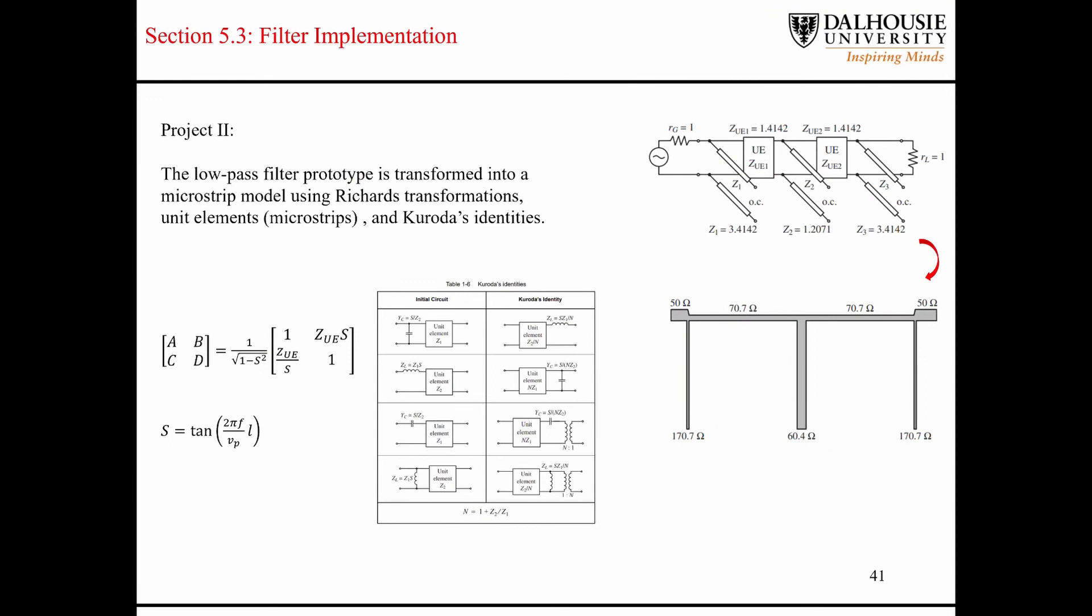So after you make a series of transformations using Corotta's identities and unit elements, basically you end up at this point here where you have a bunch of open-circuited stubs separated by microstrip lines that are defined by these unit elements. And these unit elements have these characteristic impedances, 1.4142, and those are the result of performing a bunch of these scaling using Corotta's identities. So in the end, you end up with something that looks like this.